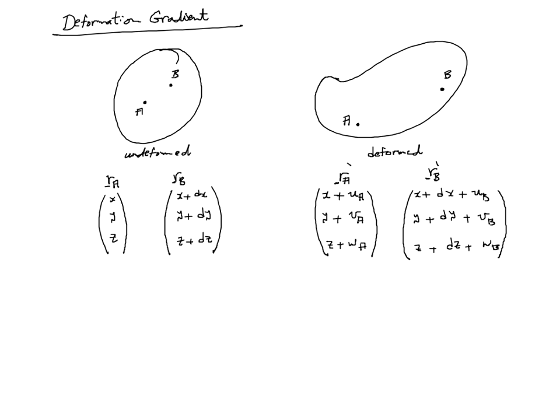The vector connecting A to B can easily be obtained in the original configuration by subtracting R_B minus R_A. We call this vector E, and it will simply be dx, dy, dz. Now let us look at the same vector in the deformed configuration.